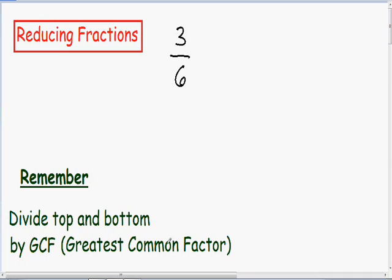And if you don't know what the greatest common factor is, it's the biggest number that you can divide by both the numerator and denominator evenly. That means that when you divide it, you can't have a decimal.